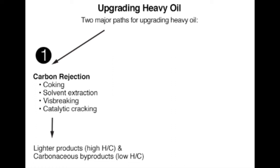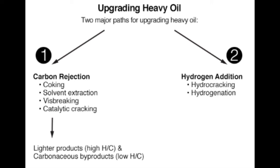One disadvantage of carbon rejection is actually losing carbon as a waste or a low-value product. The second upgrading pathway requires external hydrogen — it's a hydrogen addition process, as in hydrocracking or hydrogenation. You need to bring in hydrogen from an external resource to be able to add hydrogen to your heavy oil for upgrading purposes.